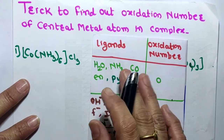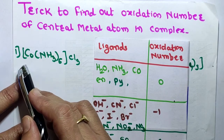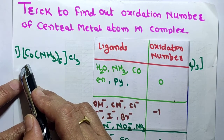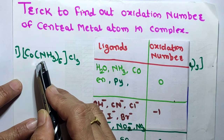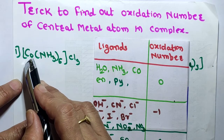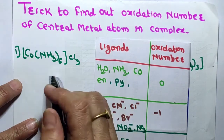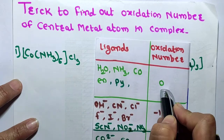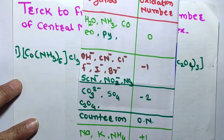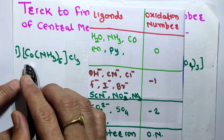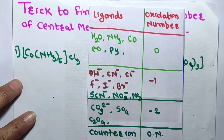The oxidation number of a central atom is the charge it would carry if all the ligands are removed with their electron pairs — the electron pairs that are shared with the central atom. So if the oxidation numbers of ligands and counter ions are known, you can easily find out the oxidation number of the central atom.